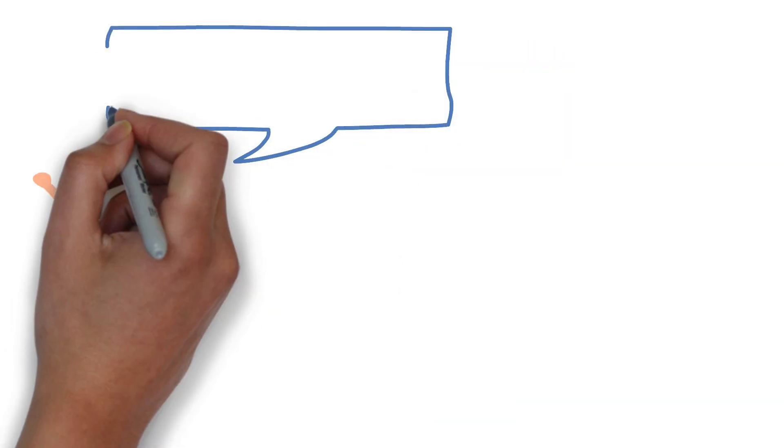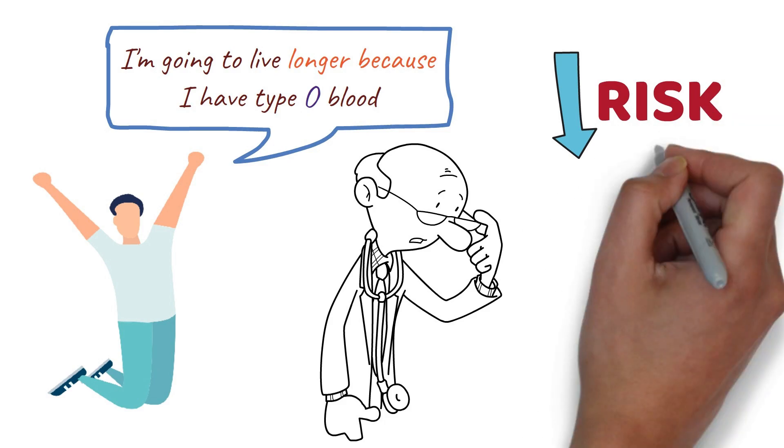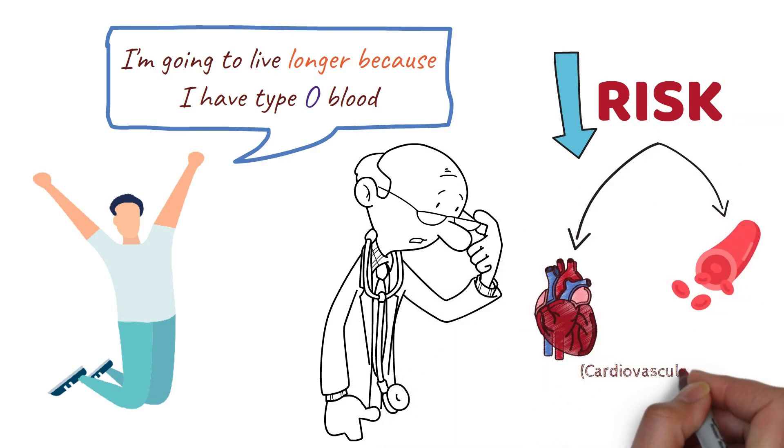Number nine, lifespan. The chances of living longer are higher if you have type O blood. Experts think your lowered risk of disease in your heart and blood vessels, cardiovascular disease, may be one reason for this.